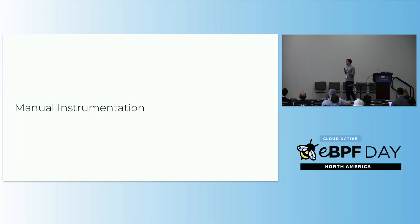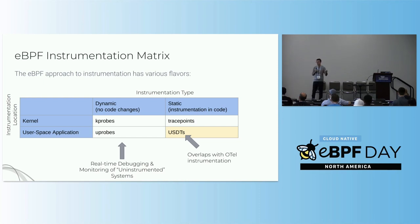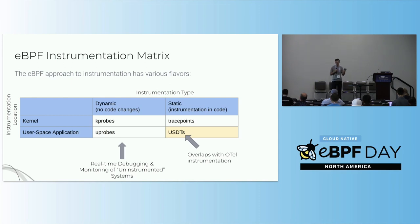I mentioned I'd briefly touch on manual instrumentation. What if you actually have to get your hands dirty and do the instrumentation yourself? Looking at eBPF, I have a two-by-two grid. On the Y-axis: where you're doing the instrumentation - kernel or user space. On the X-axis: the instrumentation type - dynamic or static. If you're doing any form of dynamic instrumentation, eBPF is the way to go - OpenTelemetry doesn't do that. If you're trying to do anything inside the kernel, eBPF is the way to go. Where there's overlap is in the bottom-right corner: static instrumentation in user space code. In the eBPF community we have USDTs - user-level statically defined traces.